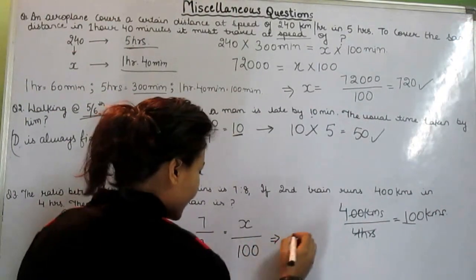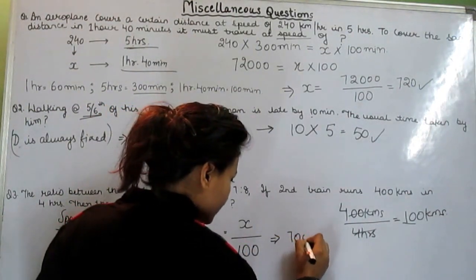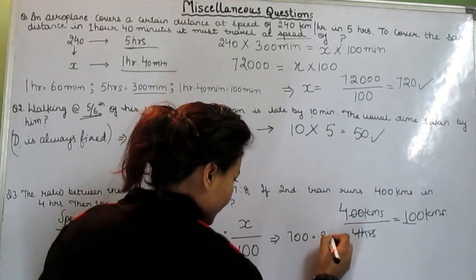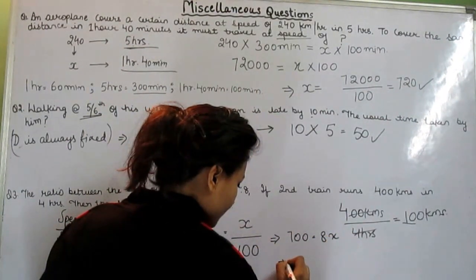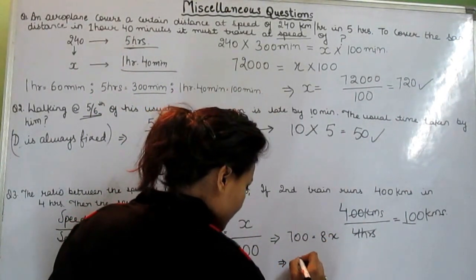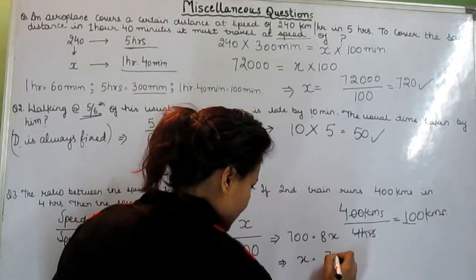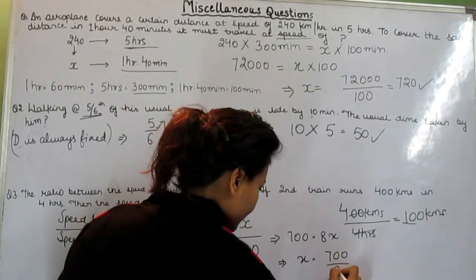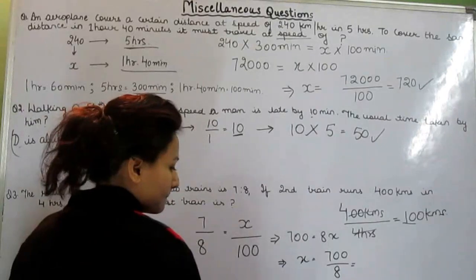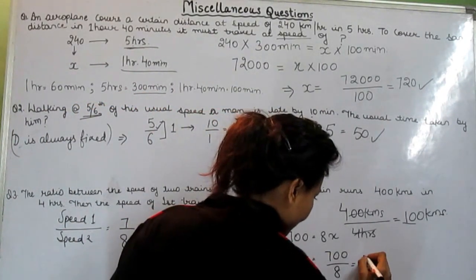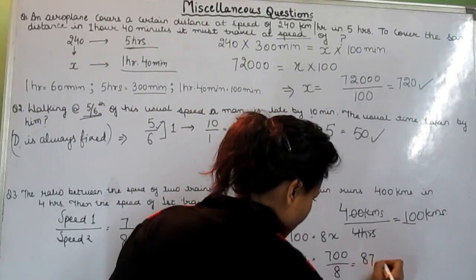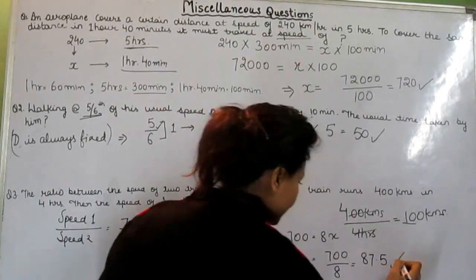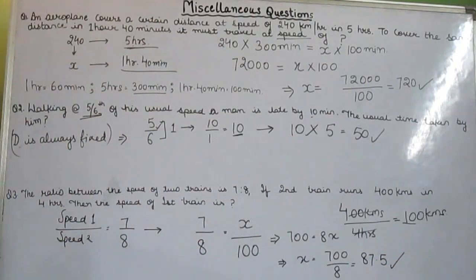And what will be that? 700 is equal to 8x. And x is equal to 700 by 8. That will be 87.5. And this will be the answer.